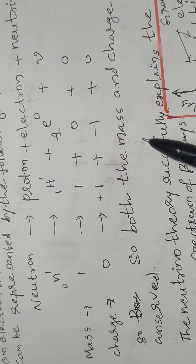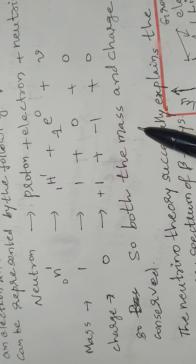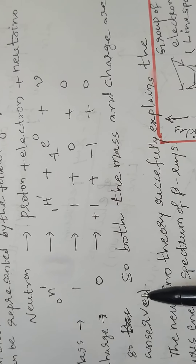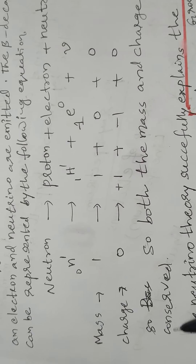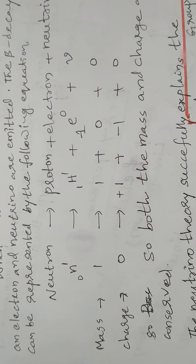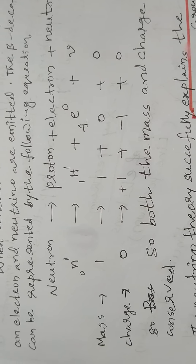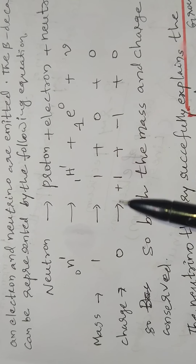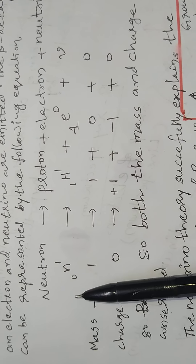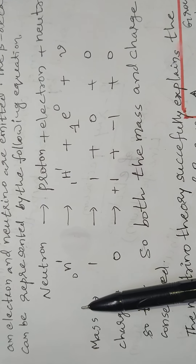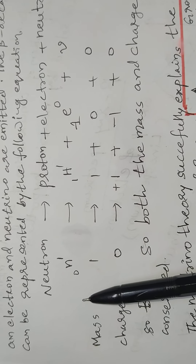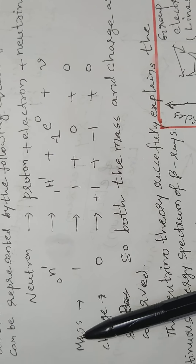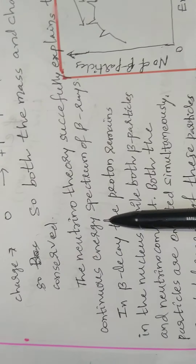Both mass and charge are conserved when a Neutron is converted into a proton, with an electron and Neutrino emitted. In this process, both conservation laws are satisfied.